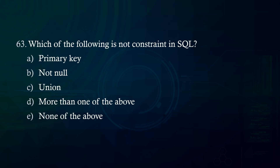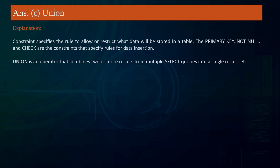Which of the following is not a constraint in SQL? A. Primary key B. Not null C. Union D. More than one of the above E. None of the above. Answer: Union. Explanation: A constraint specifies the rule to allow or restrict what data will be stored in a table. Primary key, Not null, and Check are constraints that specify rules for data insertion. Union is an operator that combines two or more results from multiple select queries into a single result set — it is not a constraint.